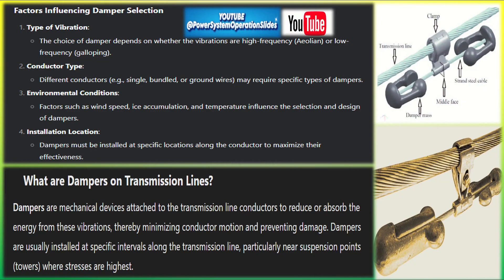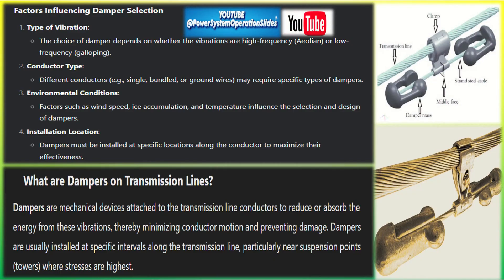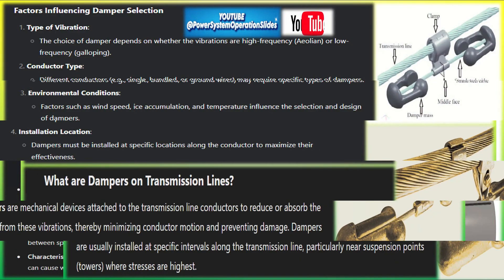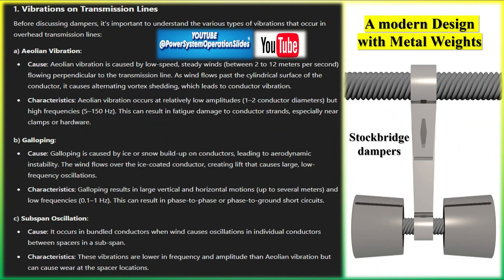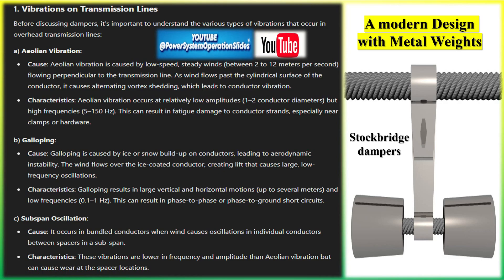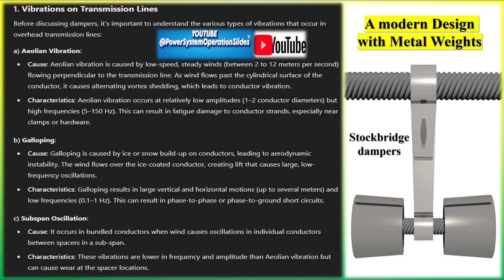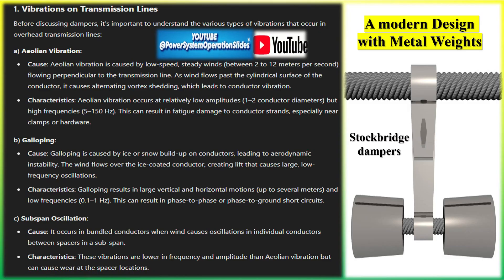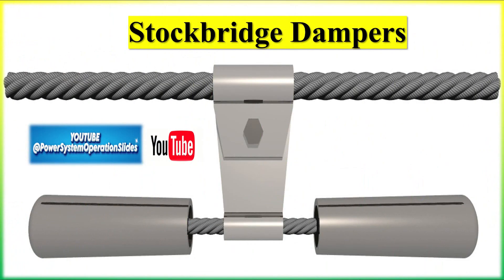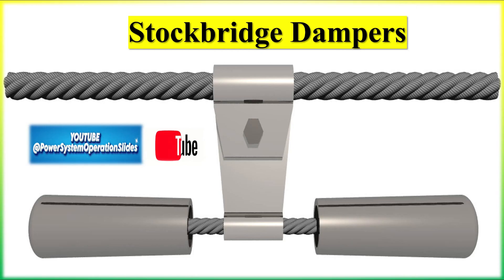There are several physical mechanisms involved. Dynamic absorption: dampers typically have a weighted mass connected to the conductor. As the conductor vibrates, the mass of the damper moves out of phase with the conductor's motion, causing the damper to absorb energy from the vibration and convert it into heat, thus reducing the vibration amplitude. Dampers are often tuned to specific vibration frequencies — for instance, dampers designed to reduce Aeolian vibration are tuned to respond to the high frequencies generated by wind-induced oscillations, ensuring they are most effective at reducing the particular type of vibration affecting the line.